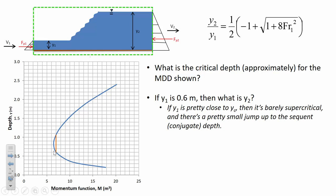The Y1 in this first illustration was pretty close to the critical depth. If critical depth was 0.8 and Y1 is 0.6, then that's barely supercritical flow. The region below the critical depth is the supercritical region of a momentum-depth diagram, and the region above is subcritical. If the flow depth is 0.6, then the Froude number probably wouldn't be very high because the two depths are relatively close together, so the jump height is small.